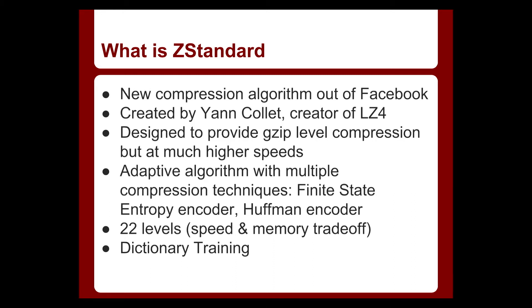ZStandard was designed by Jan Collett, who wrote LZ4, which we use heavily in ZFS today, at Facebook. The general concept is to get compression ratios closer to what you get with GZIP but faster, since with LZ4 you get less compression but more speed. It's actually a combination of a number of different compression algorithms, including a finite state entropy encoder and a Huffman encoder. Like how GZIP has its nine levels, currently there are 22 and soon to be more levels in ZStandard, providing a much greater array of speed and memory trade-off. There's also a dictionary training feature we'll talk about in a bit.